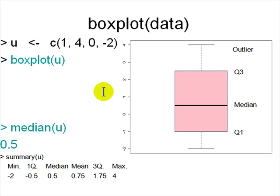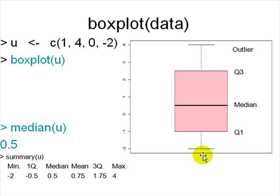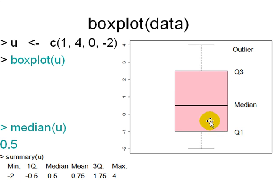A box plot is one way of showing the data. You have the u vector and type 'boxplot(u)'. It draws the plot: minimum is here, maximum is here. These extremes are called outliers. Inside the pink box are quantile 1 to quantile 3, and the median is a dark line.